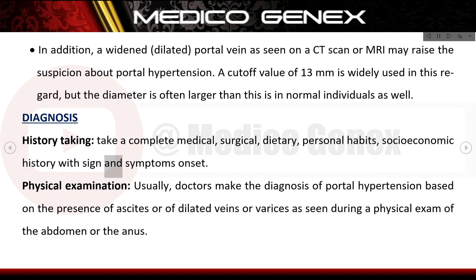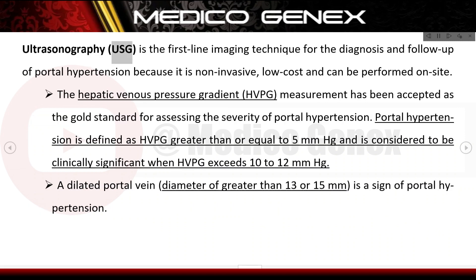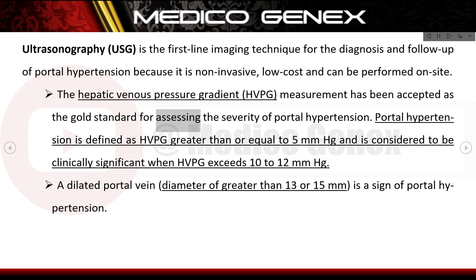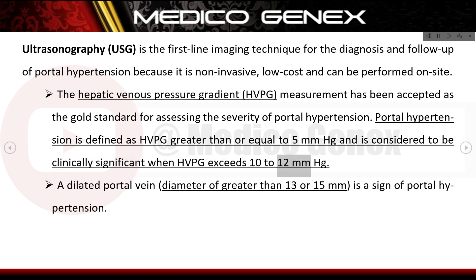Diagnosis involves taking a complete medical, surgical, dietary, and personal habits history along with signs and symptoms onset. Doctors usually make the diagnosis based on the presence of ascites or dilated veins or varices on physical examination. Ultrasonography (USG) is the first-line imaging technique, being non-invasive, low cost, and performable on site. The hepatic venous pressure gradient (HVPG) measurement is the gold standard for assessing severity; portal hypertension is defined as HVPG ≥5 mmHg and is clinically significant when HVPG exceeds 10–12 mmHg.